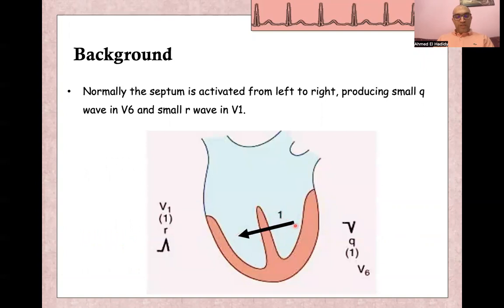Normally, the depolarization of the septum spreads from the left ventricle — from the left side towards the right side. This leads to a small R wave in V1 and a small Q wave in lead V6. This is the normal pattern.